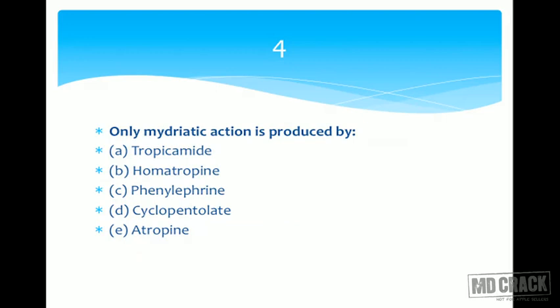Question number four: which drug produces only mydriatic action? Options are A tropicamide, B homatropine, C phenylephrine, D cyclopentolate, and E atropine. Atropine produces both mydriasis and cycloplegia.